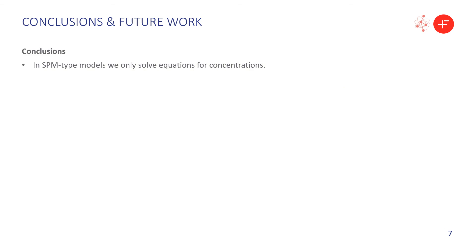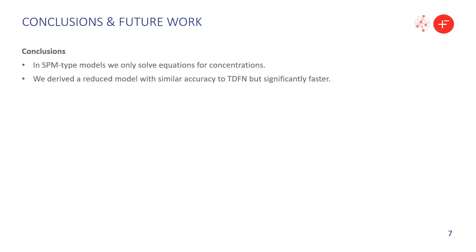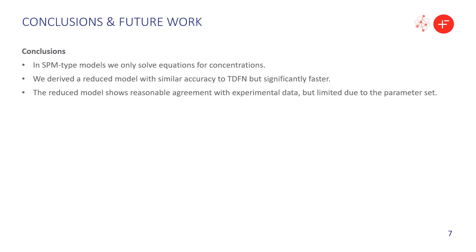To wrap up: we saw that SPM-type models are fast to solve because we've reduced the number of equations — here we always solve only for concentrations, as opposed to the DFN model where we solve for concentrations and potentials all coupled together. Using asymptotic techniques, we derived the thermal single particle model with electrolyte, or TSPME, which has similar accuracy to the thermal DFN model but can be over 40 times faster. The reduced model shows reasonable agreement with experimental data, limited by the parameter set, which does not account for temperature dependence — and the TDFN doesn't do better either; both models perform very similarly.